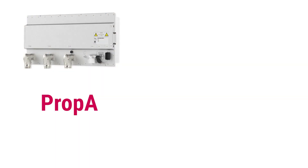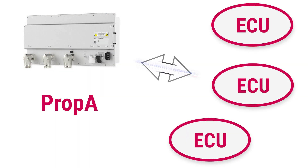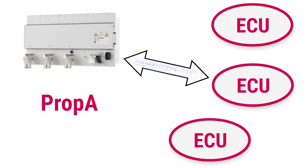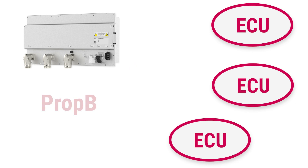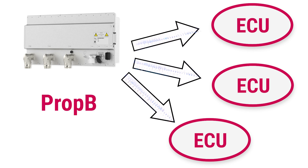Each PGN can be structured as either Prop A or Prop B. Prop A is a peer-to-peer connection format, where the T6 communicates directly with a specific ECU. Prop B is a broadcast format where the T6 broadcasts a message out to the entire network.